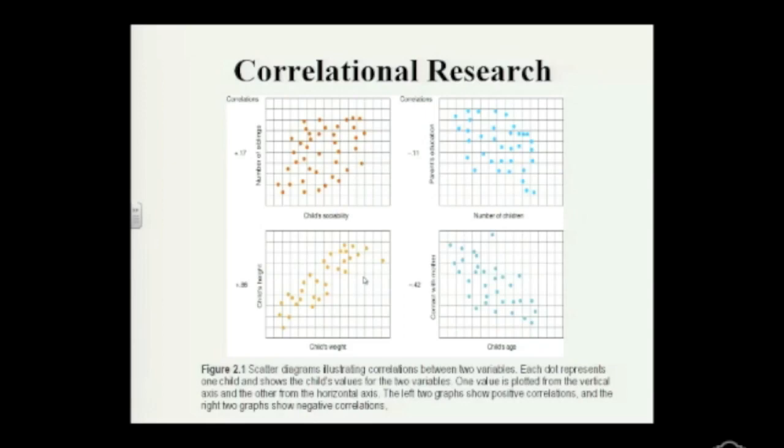This is kind of random, positive 0.17, negative 0.11. And as you can see here, child sociability and the number of siblings. It's not a very strong correlation. Over here, number of children and parents' education. Not a very strong correlation. Down here, contact with mother and child's age, a negative correlation. So as a child increases in age, their contact with the mother, in most cases, decreases. But it's not a perfect relation. Negative 0.42. It's kind of moderate. So the highest, of course, would be 1, negative or positive. You don't often get correlations that high. In psychological research, you're lucky to get 0.7, 0.8 is very high. And again, 0 would be no correlation at all.